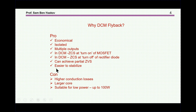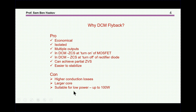Finally, the DCM configuration is easier to stabilize because of the open-loop transfer function — the small signal open-loop transfer function — which is really well-behaved: it's a 20 dB per decade drop, so it's easy to stabilize. The downside of the flyback in DCM is higher conduction losses because of the peak current, therefore you would need a larger core, and so it is really suitable for low power — probably up to 100 or maybe 70 watts — from a practical point of view.